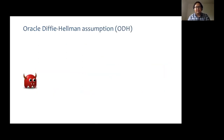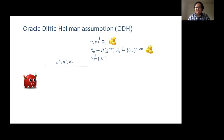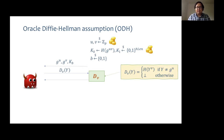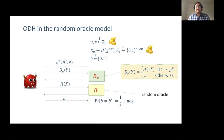Let me state the ODH assumption. Consider the following game: U and V are sampled uniformly at random from Z_P. The adversary is given G^U and G^V, along with either the hash of G^(UV) or a randomly sampled value from the image of the hash function. It has access to the decapsulation oracle D_V that takes a group element Y as input and returns the hash of Y^V as output, unless Y equals G^U — because otherwise the adversary can always find out whether it received the hash of G^(UV) or not. We shall be talking about the assumption in the random oracle model, where H is modeled as a random oracle.